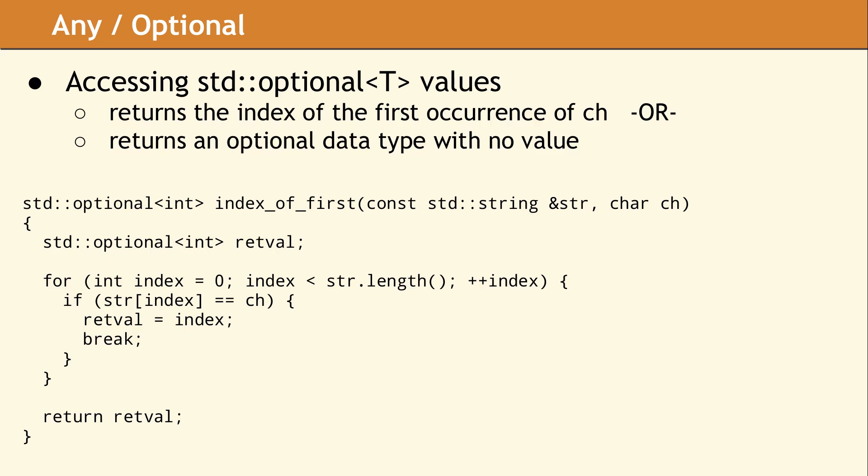Using optional encourages writing a single return statement at the end of the function. Since the variable retval is not assigned until a match is found, we avoid constructing an integer at the beginning of the function. In the case where no match is ever found, no integer is ever constructed.